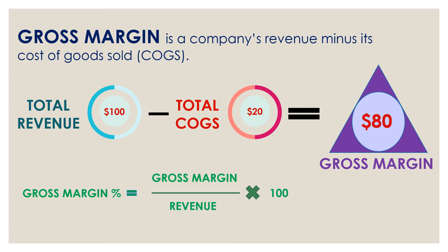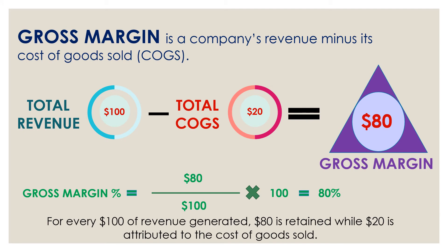Gross margin percentage is calculated as gross margin divided by total revenue, multiplied by 100. In the case of Yum Donuts, that's $80 divided by $100, multiplied by 100, giving a gross margin percentage of 80%.